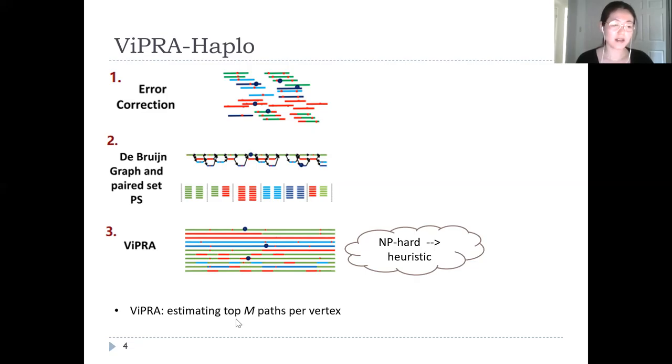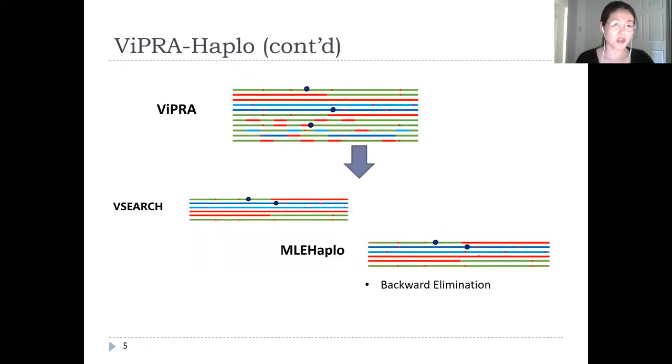ViPRA algorithm computes the paths to cover the graph using high-scoring M paths per source vertex in the graph. The accuracy and the number of contigs generated by ViPRA is due to the choice of M. To reduce the candidate paths overestimated by ViPRA, we propose two methods to obtain an optimal set of contigs representing the viral haplotypes.